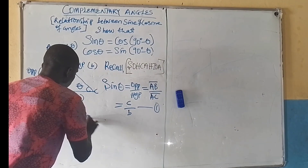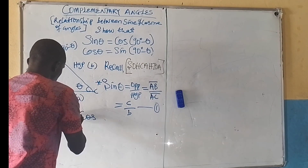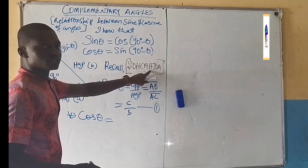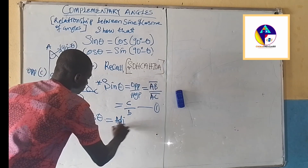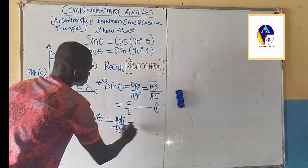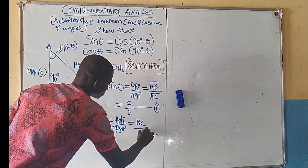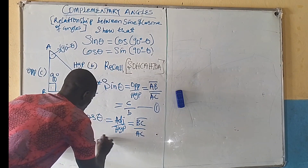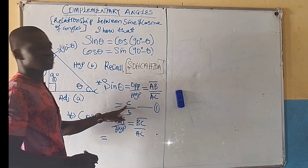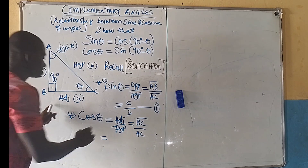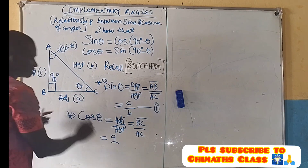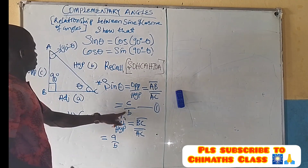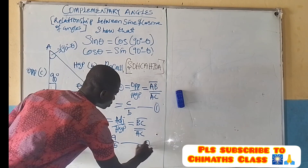Similarly, we are going to establish cos θ. Cosine is adjacent over hypotenuse, so cos θ equals line segment BC over line segment AC, which in lowercase letters is a over b. Let's call this Equation 2.